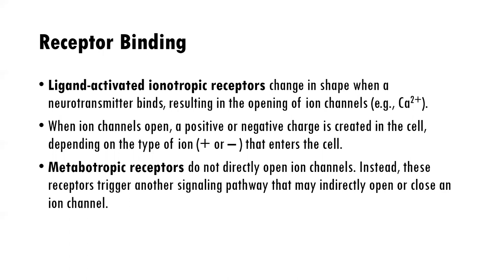The ligand-activated ionotropic receptors change in shape when a neurotransmitter binds to them, resulting in a direct opening of ion channels. For example, let's say glutamate binds to a receptor that leads to the opening of an ion channel that receives positive ions — direct entry. When ion channels open, a positive or negative charge is created in the cell depending on whether those ions are positive or negative.